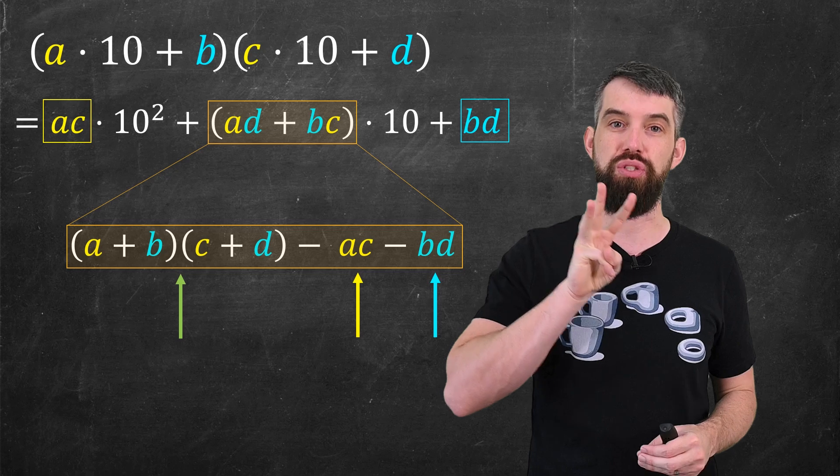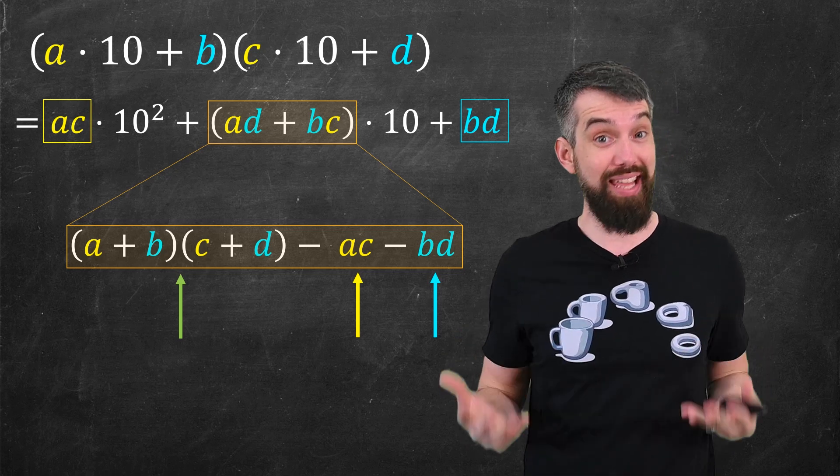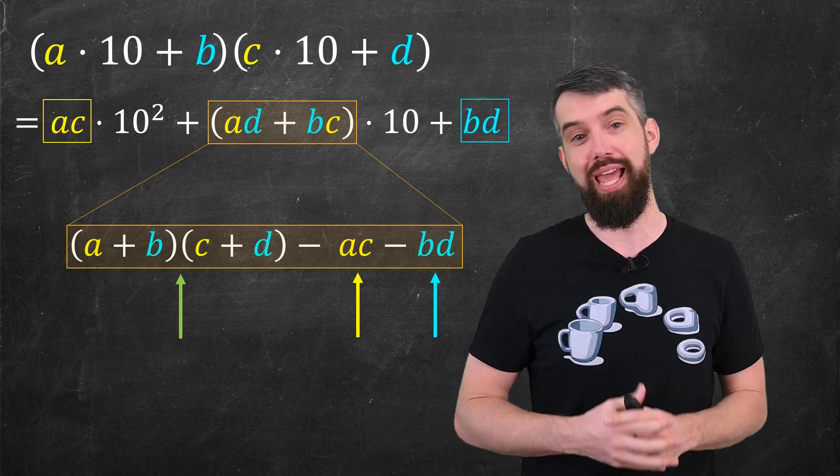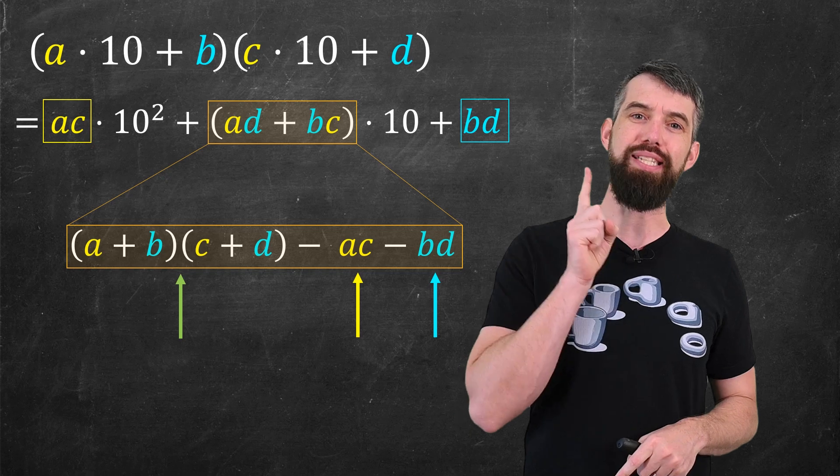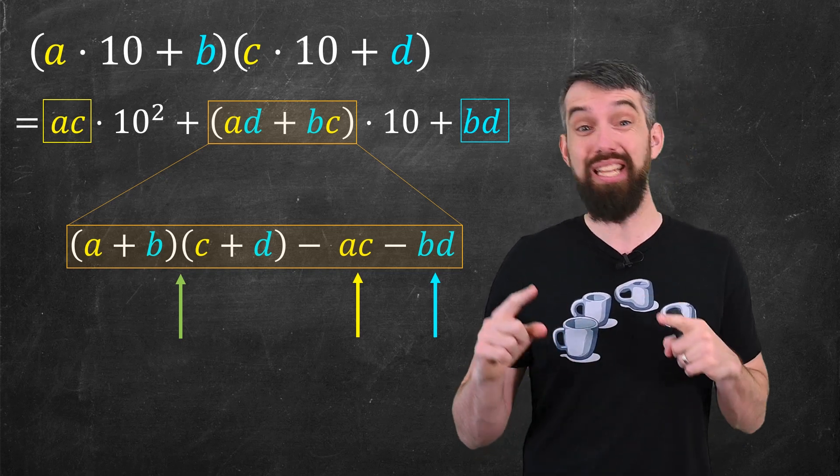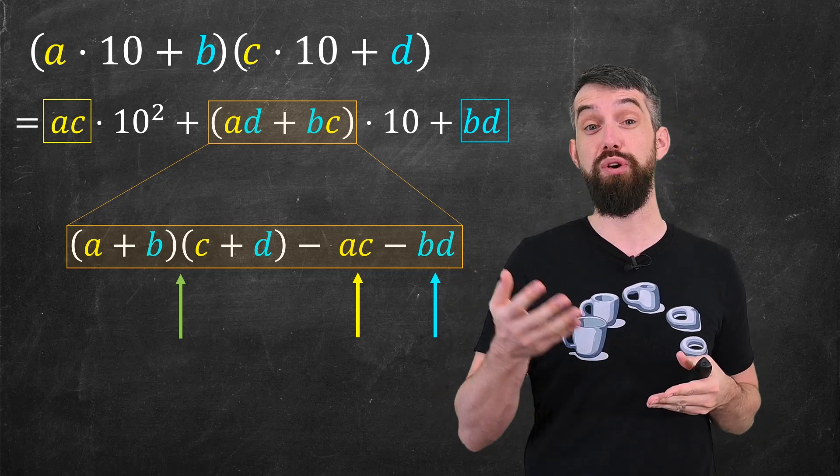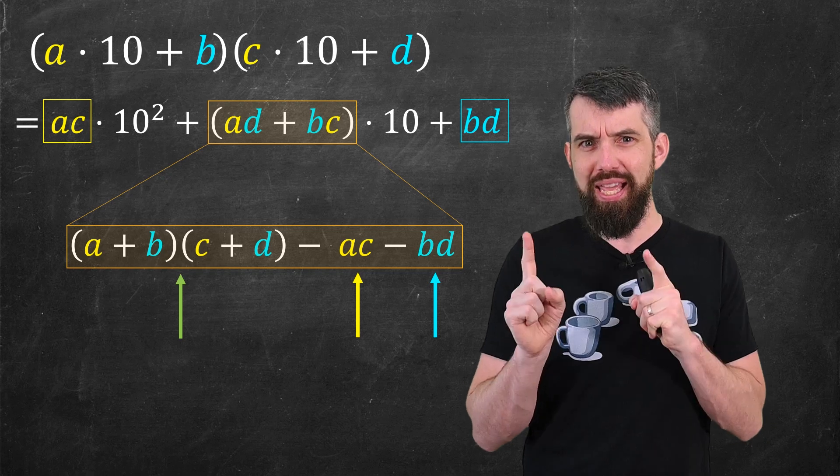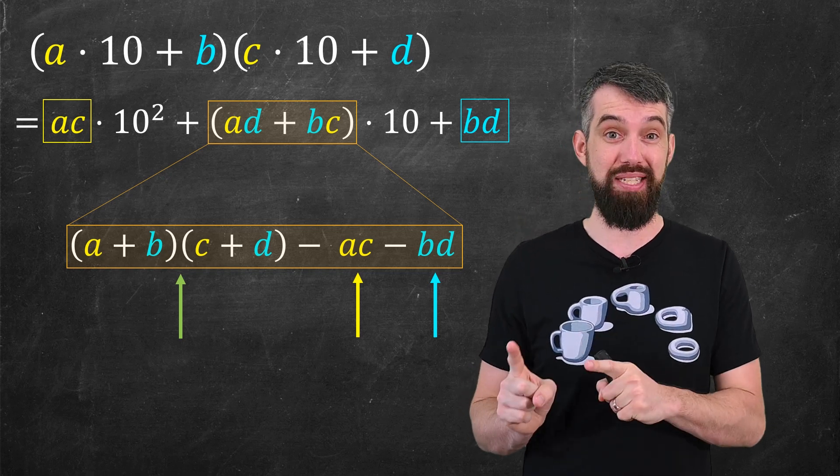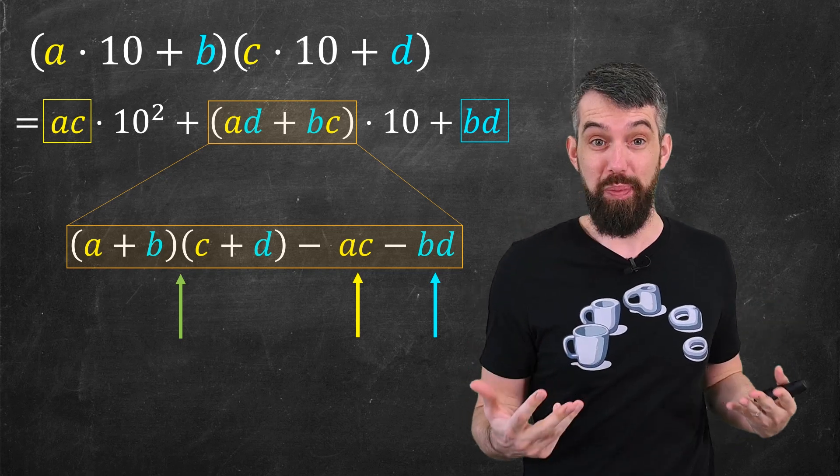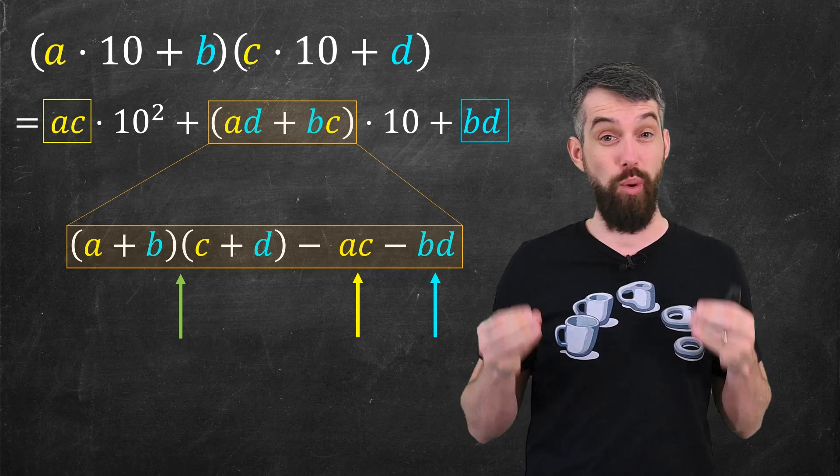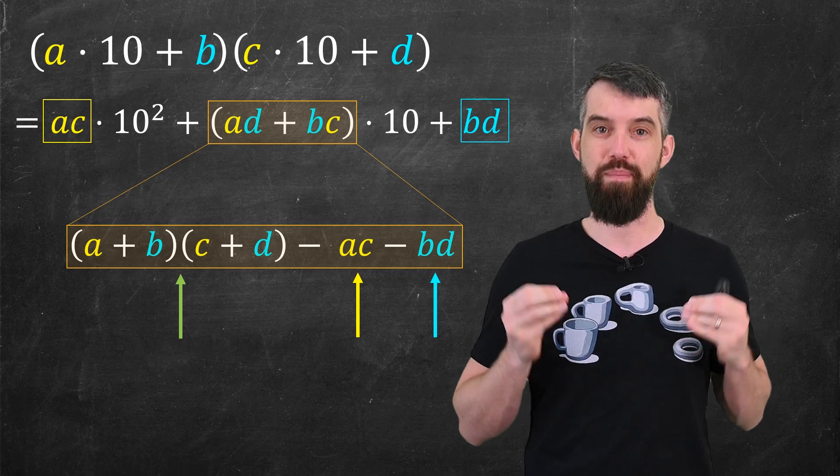This is called the Karatsuba algorithm. Now while I have a gain that I have less multiplications to do, I do have more additions to do. But as we're going to see a little bit later, and depending on your computer's architecture, multiplications are going to be the things that slow us down. So having to do less multiplications, even at the cost of more additions, is going to be a net benefit to us.